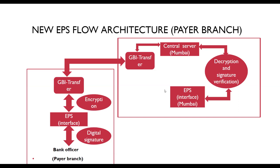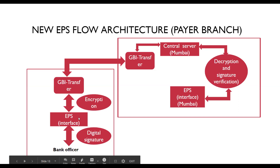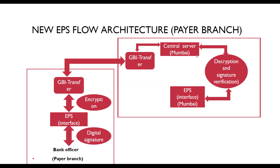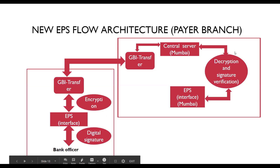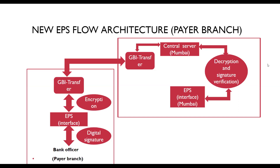The verification process also checks the status of the user's digital certificate, whether it is in the CRL or via an OCSP check. If the status of the certificate is invalid, the transaction will be rejected; otherwise, it will be stored in the local PM. To summarize the payer branch flow: the transaction is digitally signed and encrypted and sent to the EPS officer, who verifies the digital signature and certificate and then stores it in the local PM.